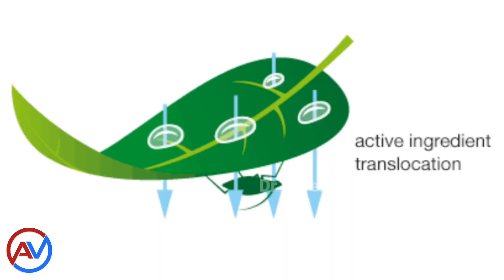It exhibits translaminar action and moves to the other side of the leaf fast. Vapor action improves control of disease even in dense vegetation canopy, as the vapor activity covers the chemical on the same leaf you spread as well as the adjoining leaves.